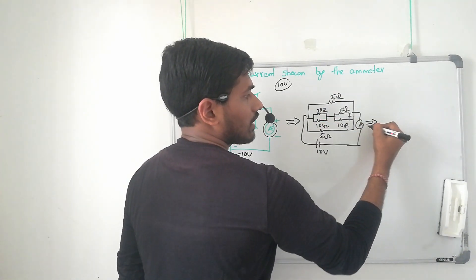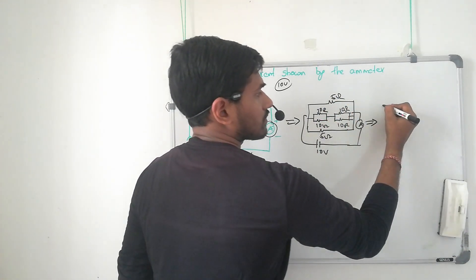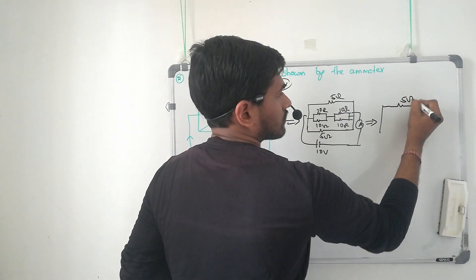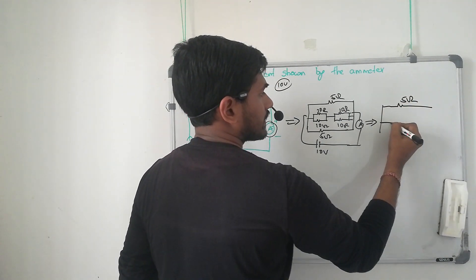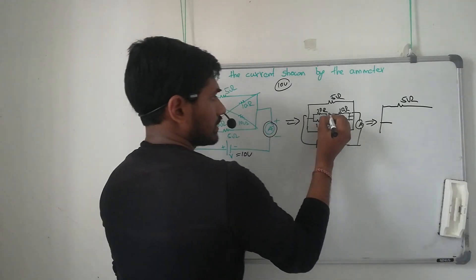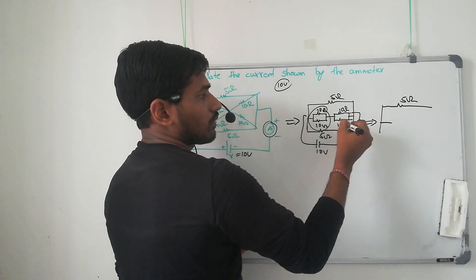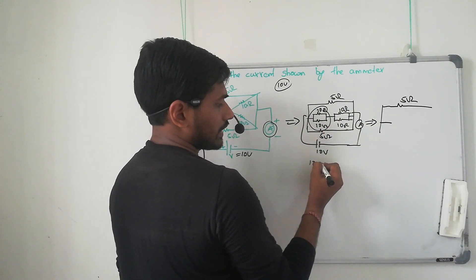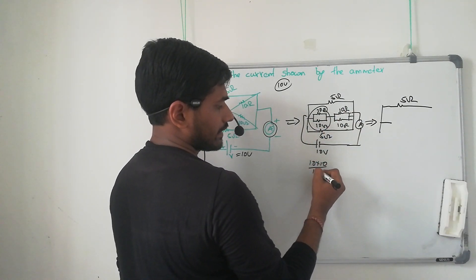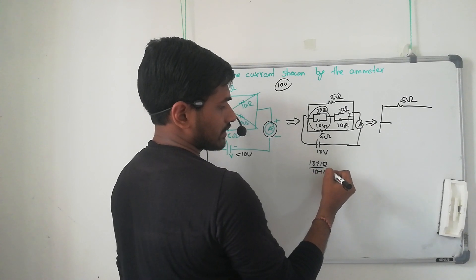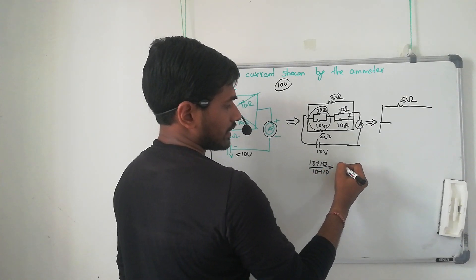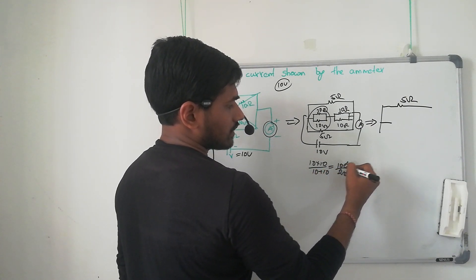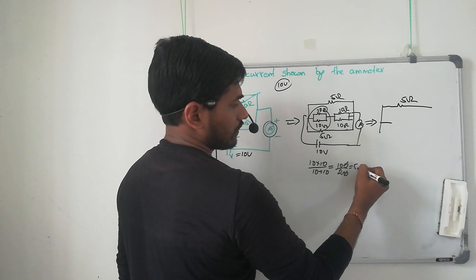So the same circuit can be resolved in the easiest way. Here 5 ohm, here also 5 ohm, and here 10 ohm and 10 ohm. These two 10 ohm resistors are in parallel: 10 × 10 divided by 10 + 10 = 100 divided by 20, which gives 5 ohm.